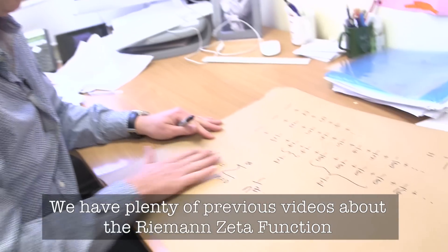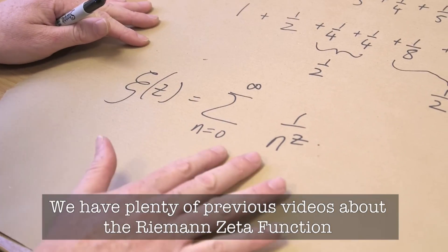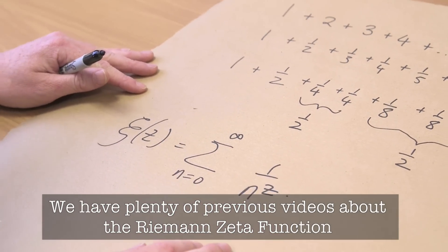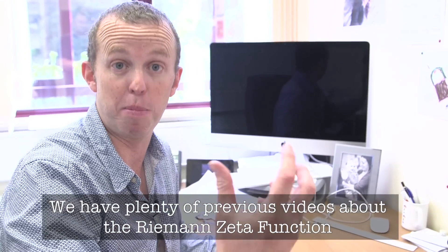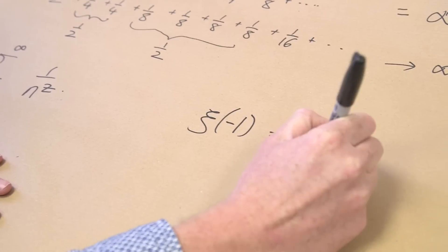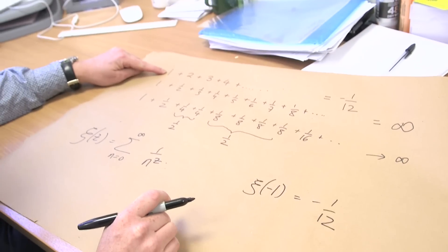What you do is you define this function this way, and it's well defined clearly when z — the real part of z — is bigger than 1. What you then do is come up with some alternative integral representations that can also describe the function. It allows you to extend its definition even when the real part of z is less than 1. And it's for that reason that we can say that zeta of minus 1 is minus one twelfth, which is why we get this result.